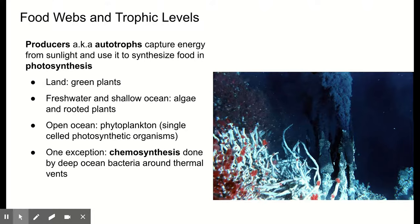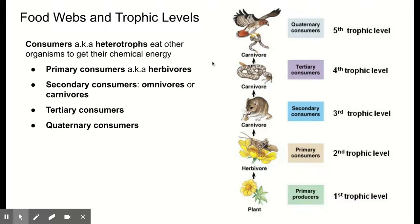Now the animal side: organisms that don't make their own food, that don't make glucose, are called consumers — also called heterotrophs. They have to eat other organisms to get their chemical energy. Some have mouths like animals, but fungi and mushrooms are also consumers. They don't do photosynthesis and must consume their food for energy, but they don't have a mouth. We group our consumers based on what they eat.